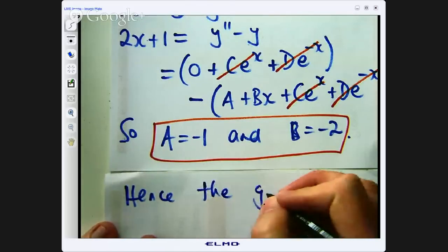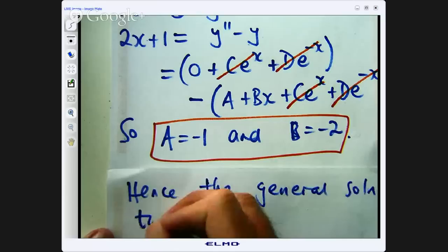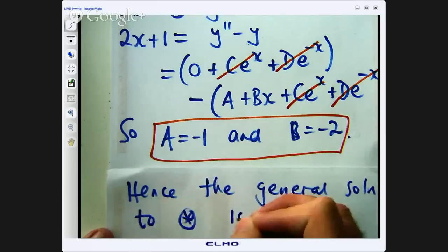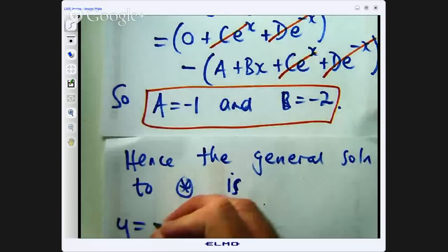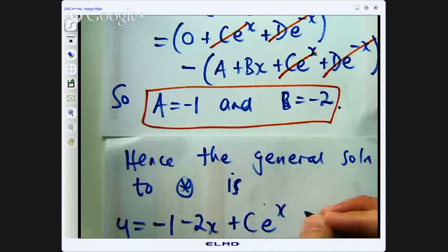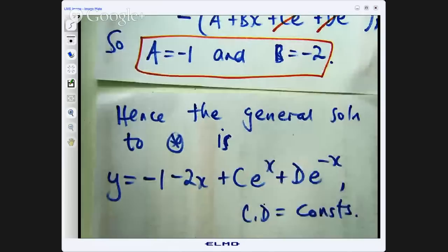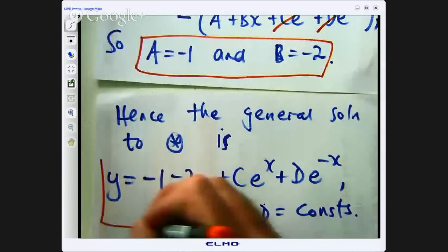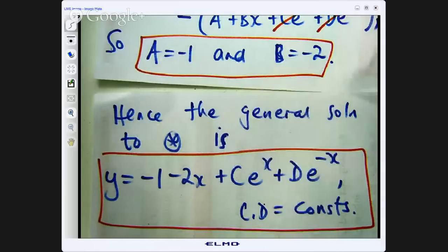Hence the general solution to our ODE star is the following: y = -1 - 2x + ce^x + de^(-x). Alright, so let us just highlight that.